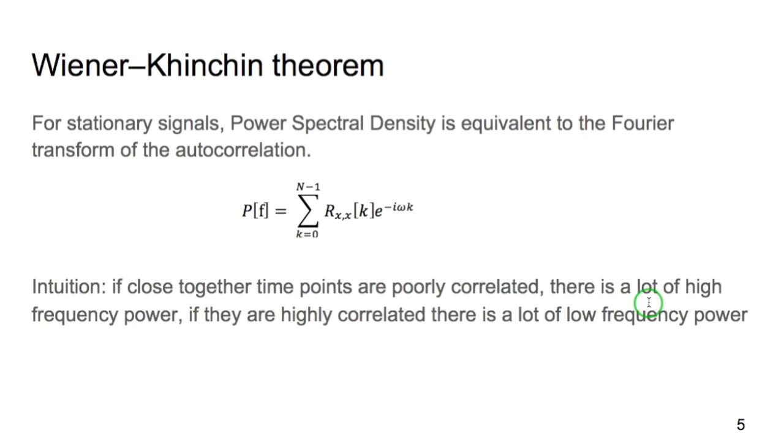Another use of the autocorrelation is to arrive at the power spectral density that we discussed in the previous lecture. So the Fourier transform of the autocorrelation is equivalent to the power spectral density. The intuition behind that being that if two time points which are close together are poorly correlated, then there must be a lot of high-frequency power. Whereas if they're highly correlated, they're moving together on the same phase of a low-frequency oscillation.